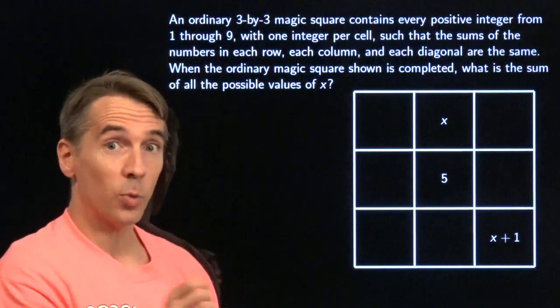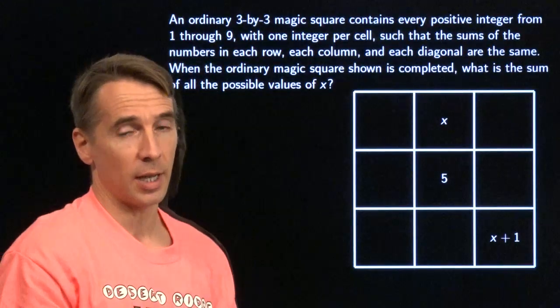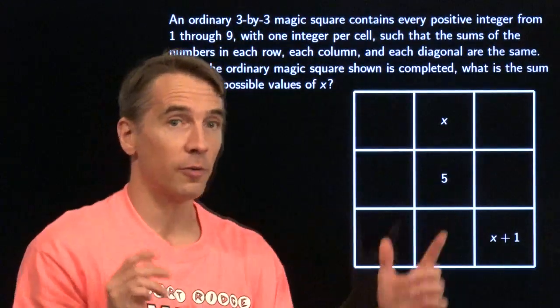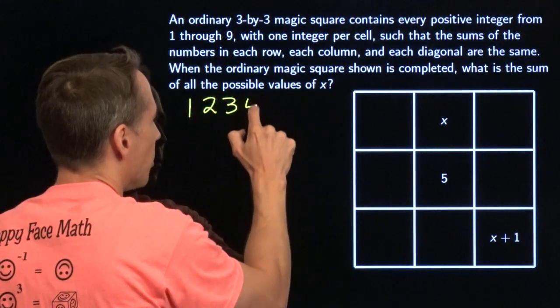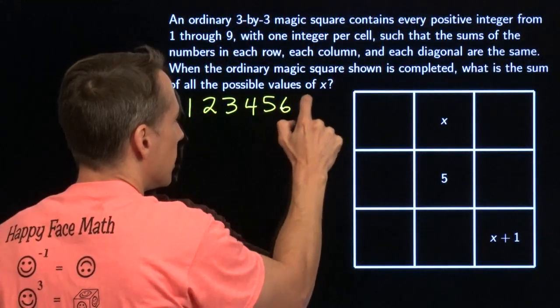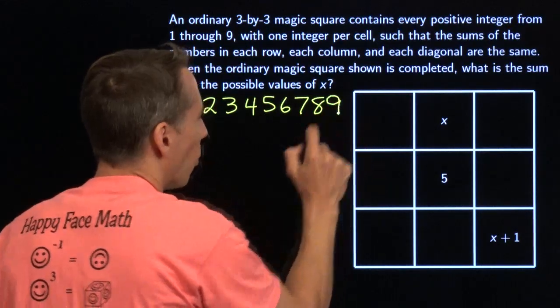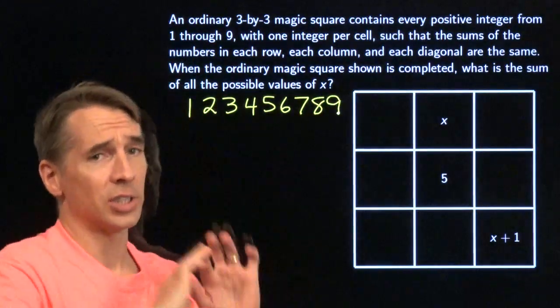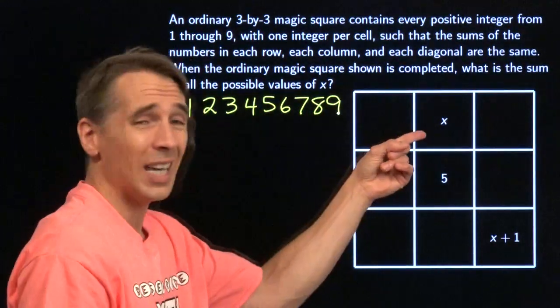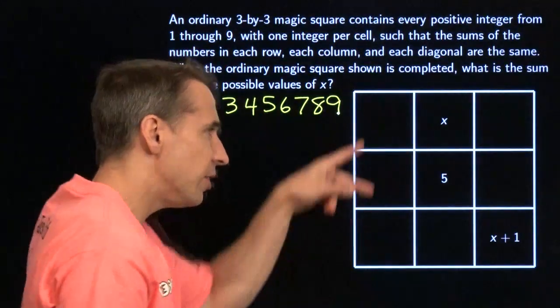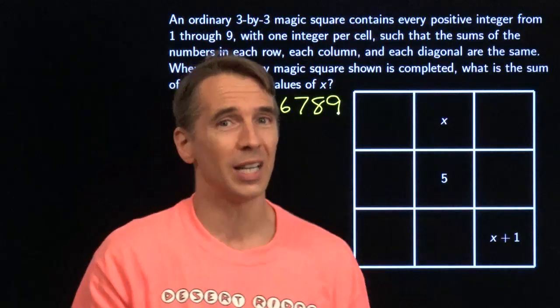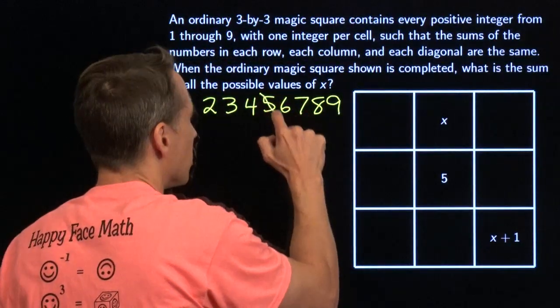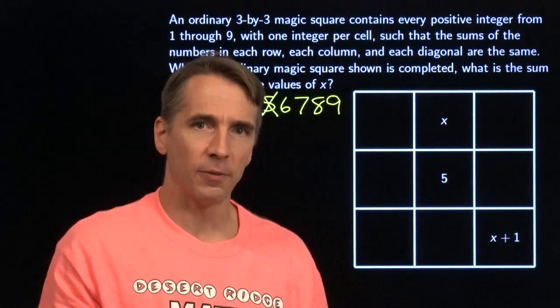Right away, we see that x is one of those numbers we put in one of these cells, so x has to be a number from 1 to 9. Let's go ahead and write all those numbers down. And right away, we see that we can't use just any one of these numbers, because we can't use 5. If we put 5 in there, we'll have two 5s in the grid, and that's no good. We have to use each number from 1 to 9 exactly once, so x can't be 5.